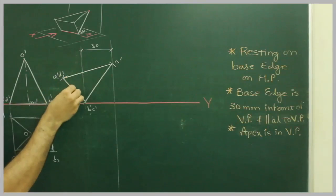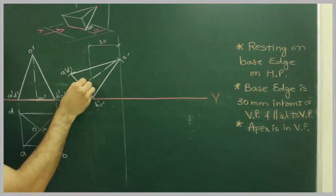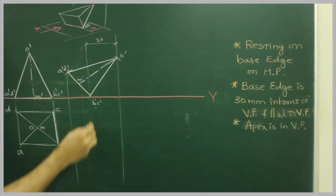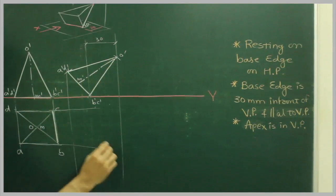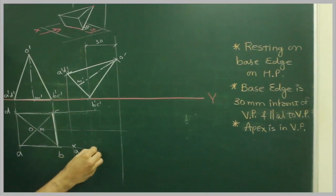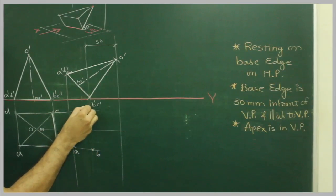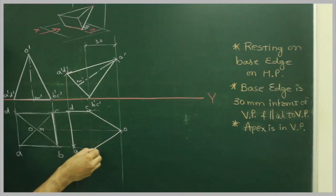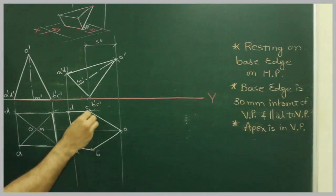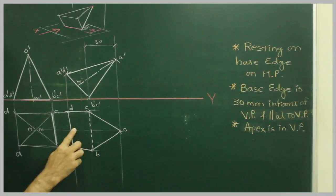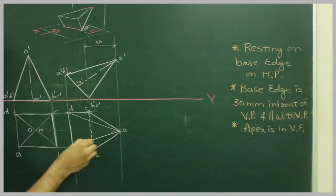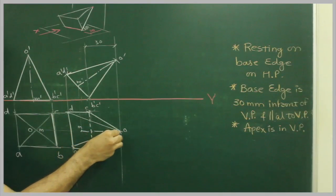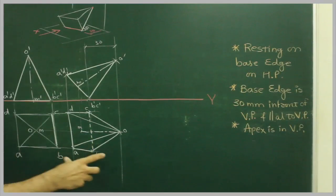This is A dash B dash. This is M dash. Project D dash from here. O dash from here. This is A, B, C, D, O. BC. This is center. OV. And O here will be dark. This is M. X is there. So we are done with the top view.